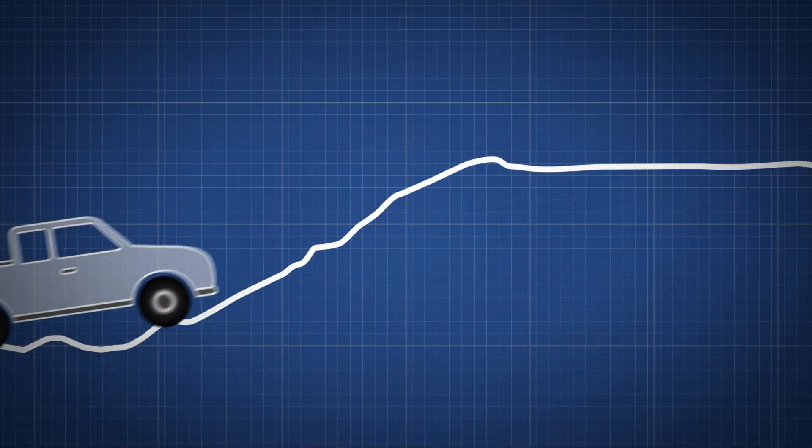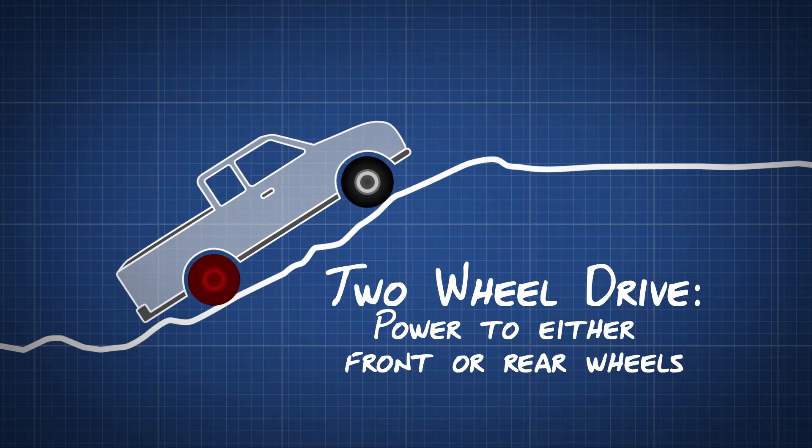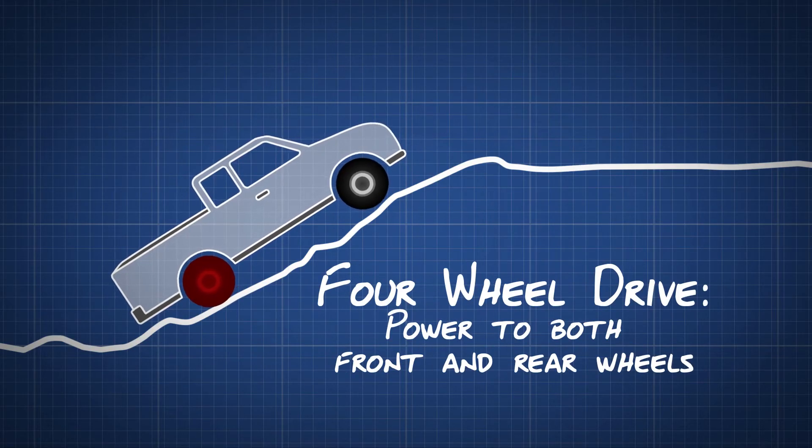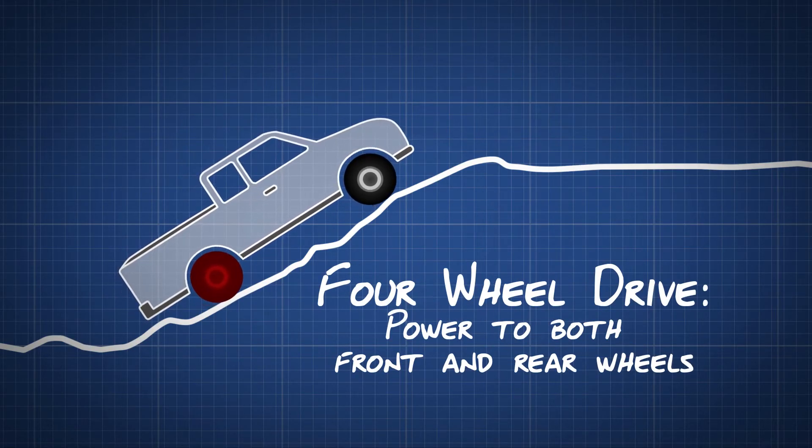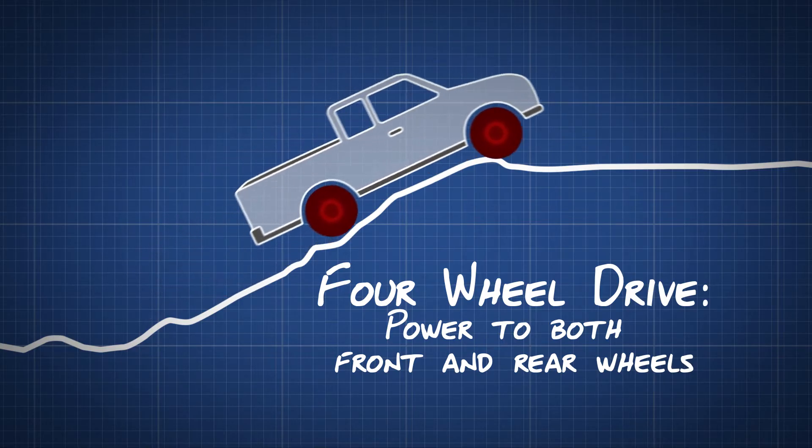Unlike a two-wheel drive car where the power goes either to the front or rear wheels, four-wheel drive works by sending power from the engine to all four wheels. This means that all the wheels are powered which gives the vehicle more stability and power.